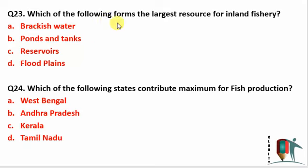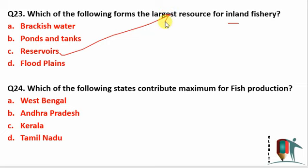Which of the following forms the largest resource for inland fishery? As per the Economic Survey, reservoirs form the largest resource for inland fishery — meaning maximum fish are captured from reservoirs. This question can also be asked from the fishery section.